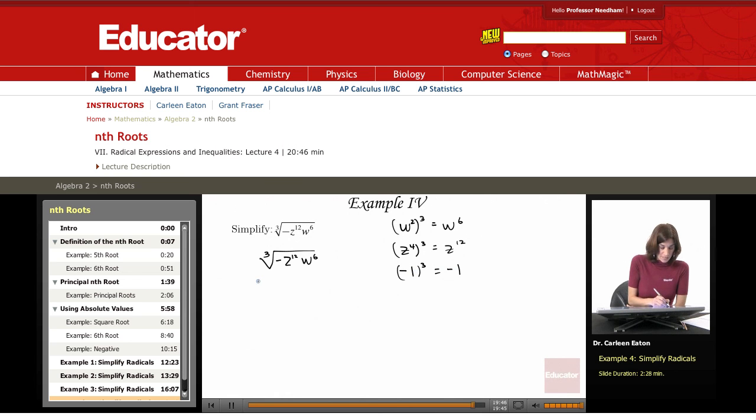So I can look at this just separately. This is the cube root of negative 1 times z to the 12th times w to the 6th. And I found each cube root right in here. I could even rewrite it that way to make it clear what's happening.